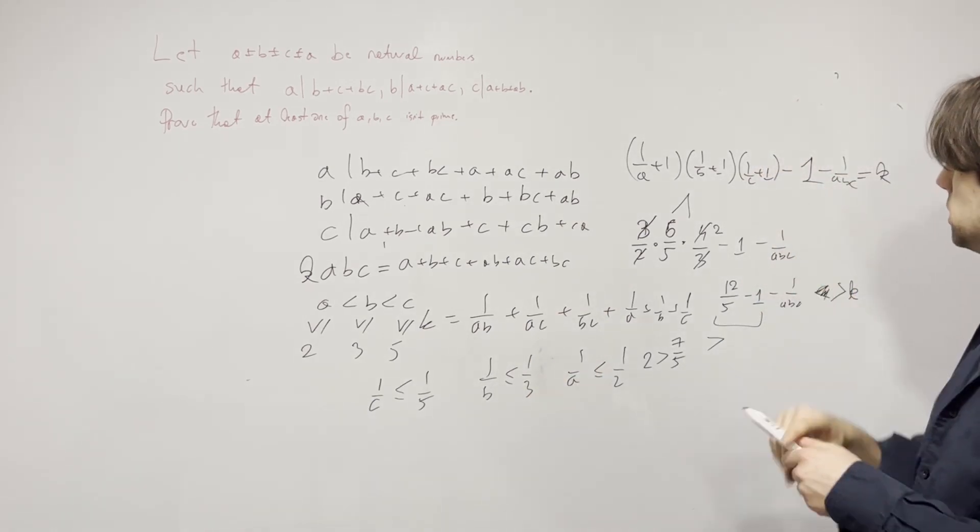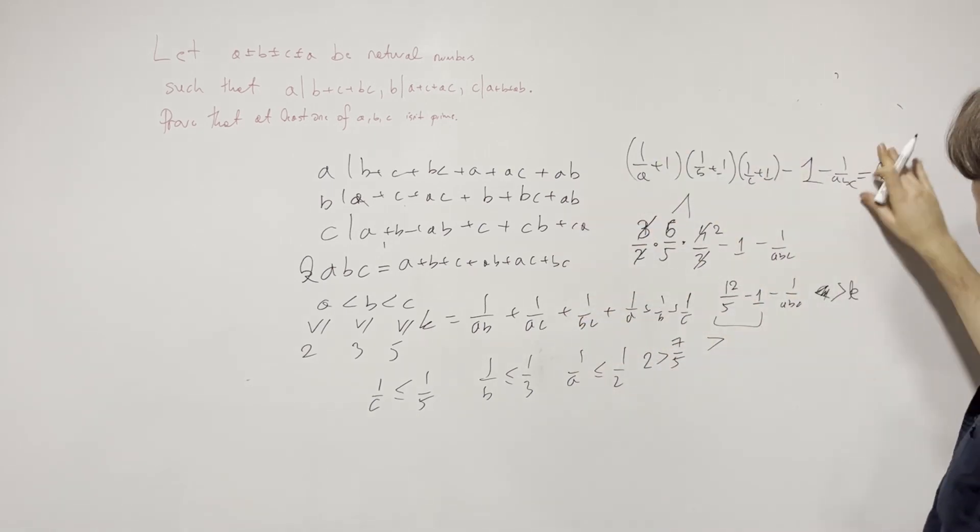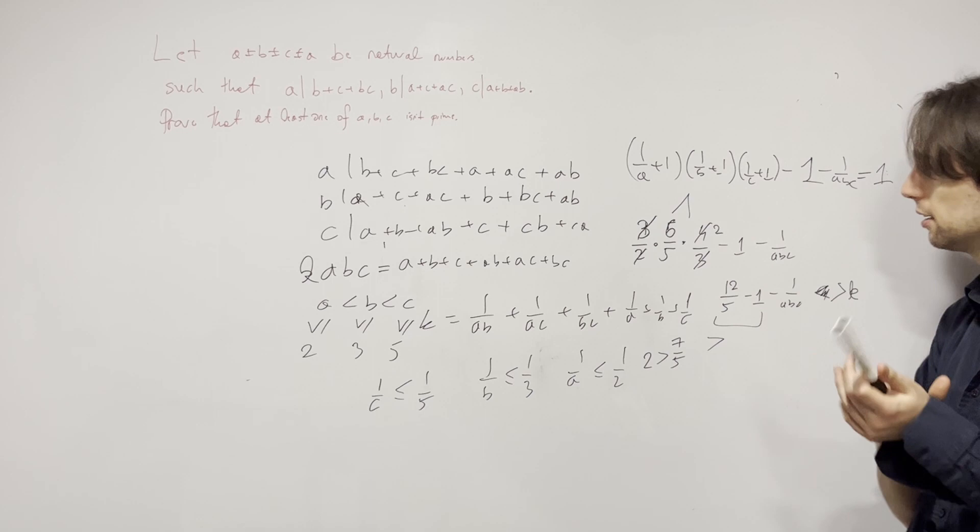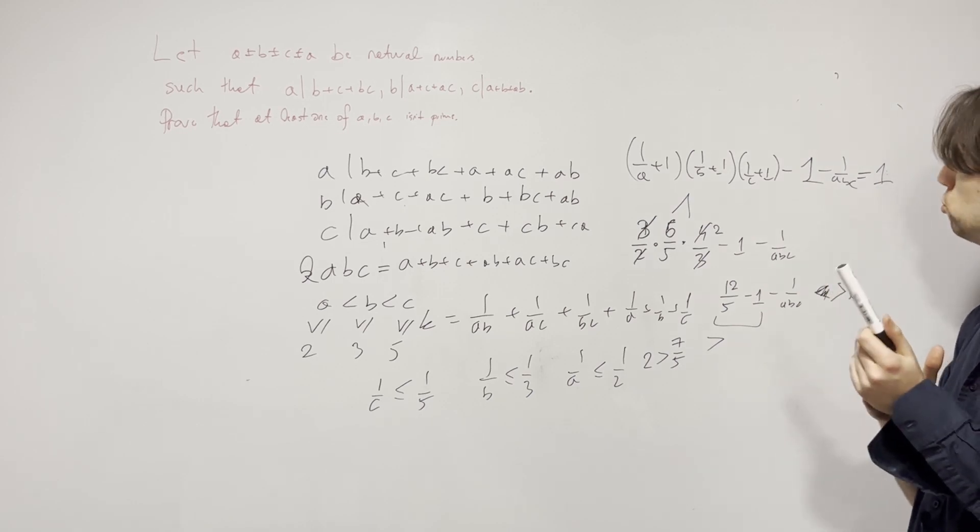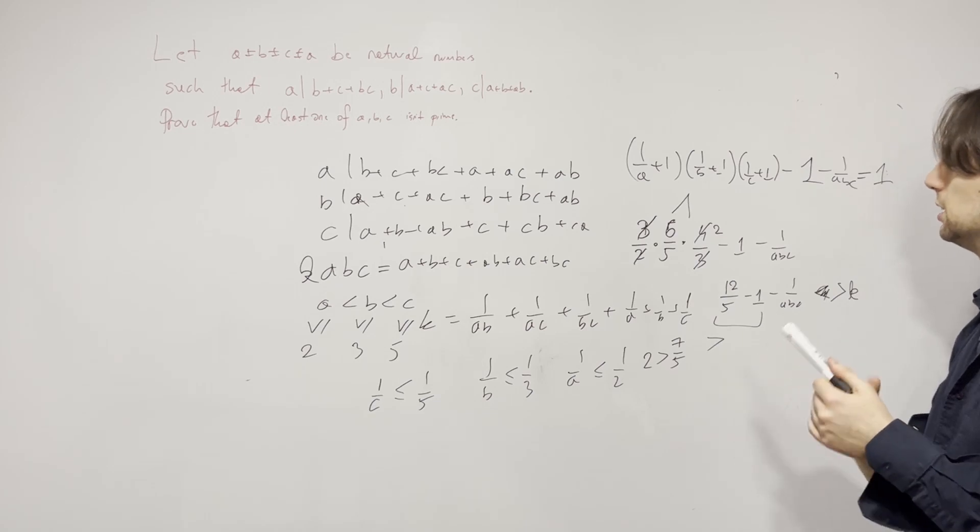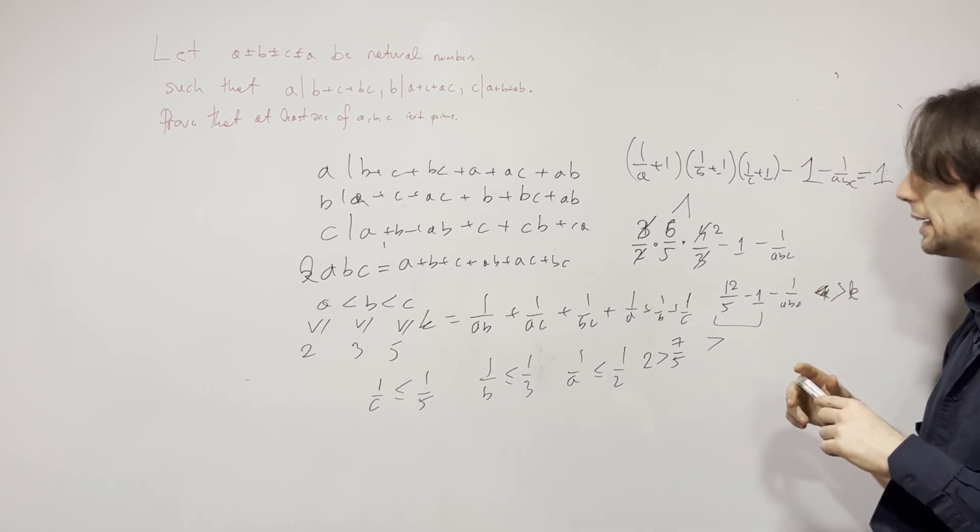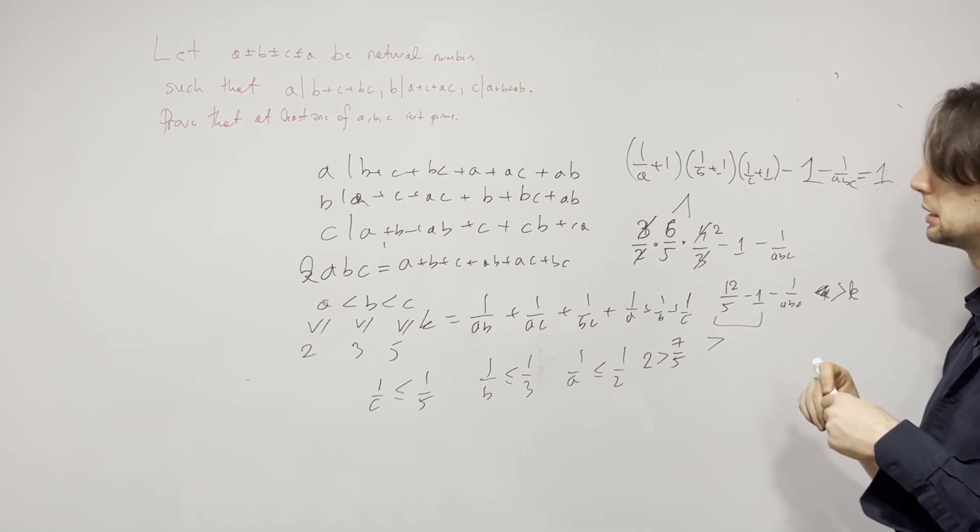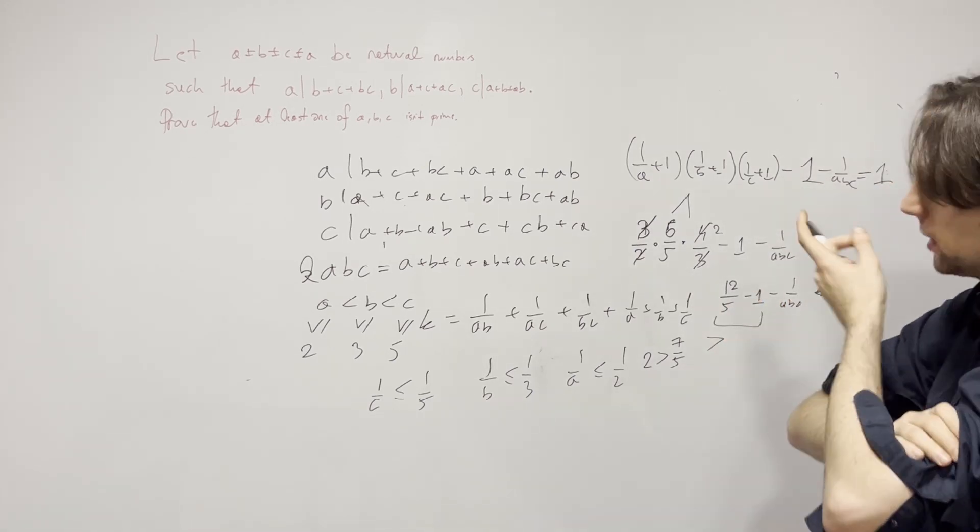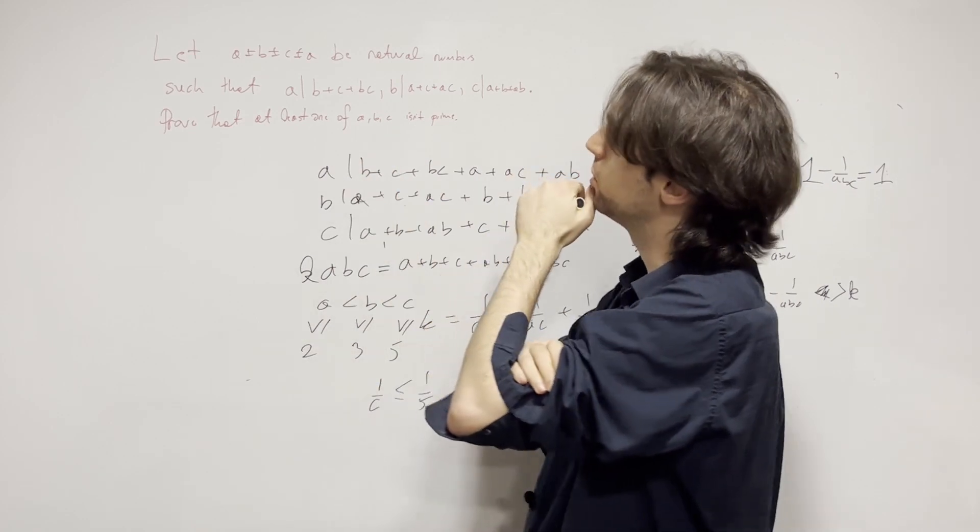And we can even use this estimate, mind you. Now K, now this whole thing is equal to 1. Now we know that. And how can we actually go about solving this? Is there any other way except a case-by-case basis? I don't know. Let's actually think now if there's anything else we can do except a case-by-case. So can one of them be 2?